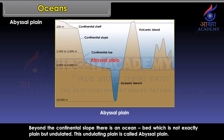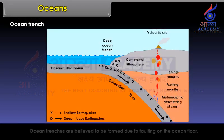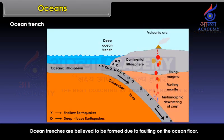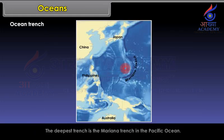Ocean Trench. Ocean trenches are believed to be formed due to faulting on the ocean floor. These trenches are formed very deep on the ocean floor and are often known as ocean deeps. The deepest trench is the Mariana Trench in the Pacific Ocean.